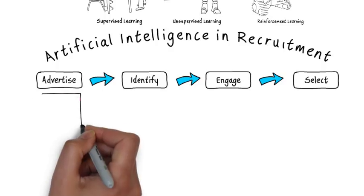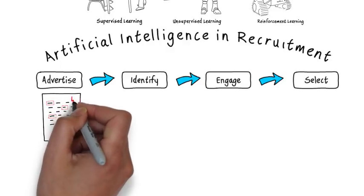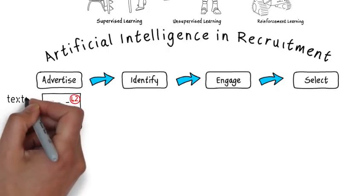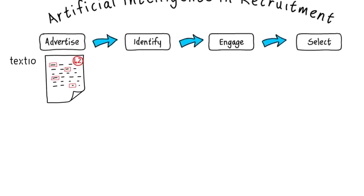Under the advertise heading we have Textio. Textio reviews and scores your job advertisement copy. It looks at how positive the language is and the use of corporate cliches and gender balance. It then makes suggestions on how you might improve your score with a number of amendments.